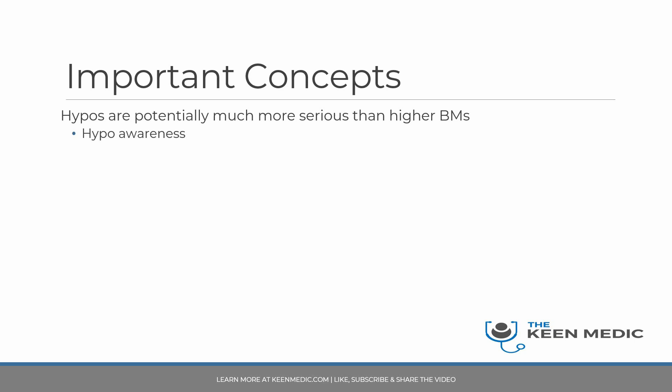Good hypoglycaemic awareness means that below a certain threshold — generally under 4 mmol/L, though this varies per patient — the patient develops warning symptoms such as sweating and feeling shaky. These symptoms allow them to act and reverse the hypoglycaemic episode before it worsens. If they lack these symptoms entirely, there is no opportunity to reverse the hypo, which is dangerous. Read further about this important topic.